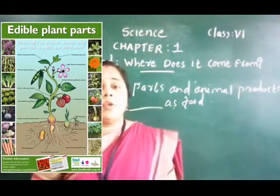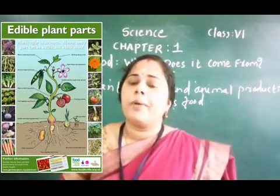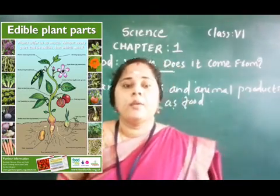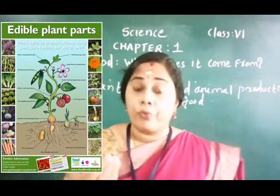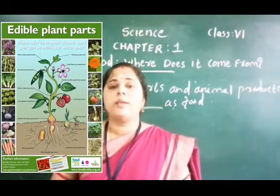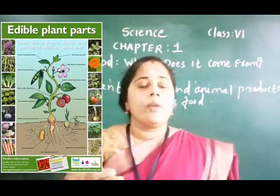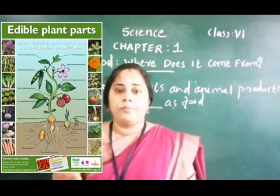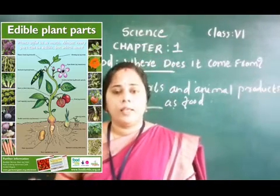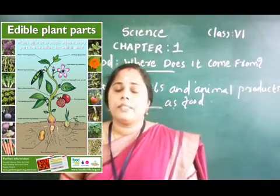We all know that fruits and vegetables we get from plants. We eat vegetables, we eat fruits. Sometimes we eat stems, sometimes roots, and flowers also. For example, in the case of mustard plants, they give us oil, and the leaves are used as a vegetable.